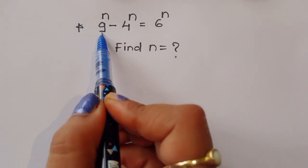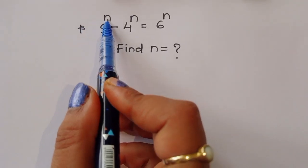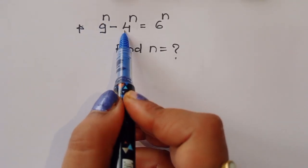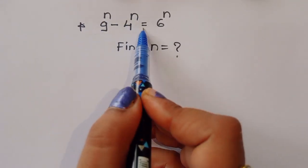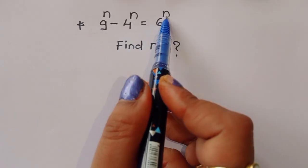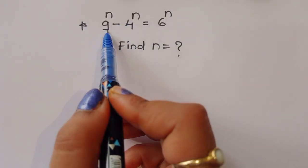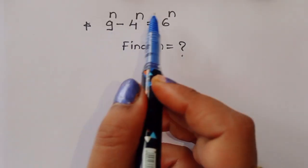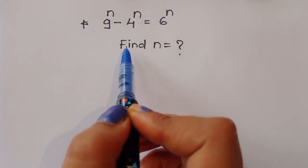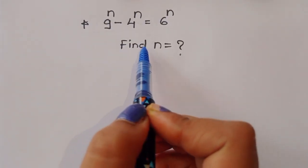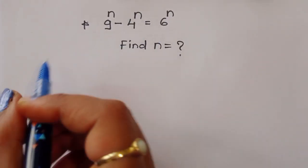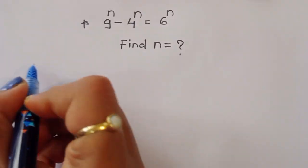The question is: given 9 power n minus 4 power n is equal to 6 power n, we have to find out the value of n. Let's see the solution.